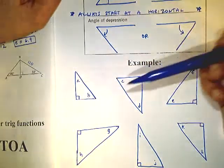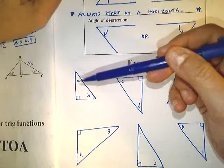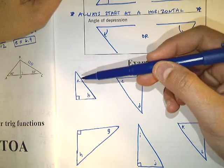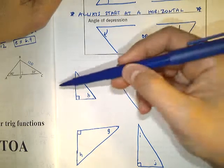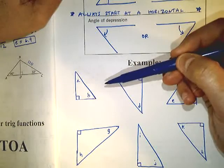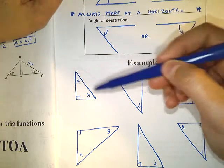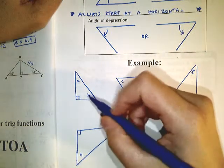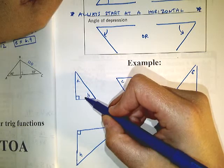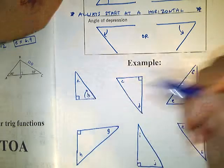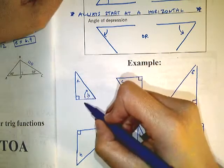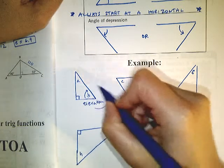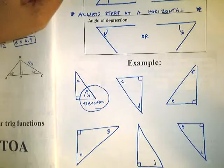Is there an angle of depression or elevation at either corner? Corner A is nothing — it does not have a horizontal from which to measure. Corner B does have a horizontal; it starts there and rotates upward, so angle B is an angle of elevation. Angle A is neither.